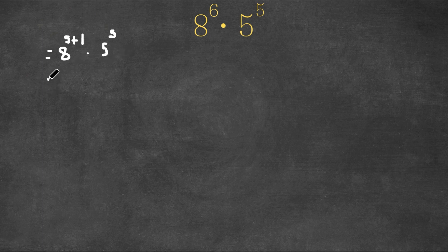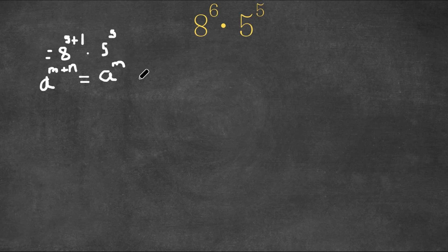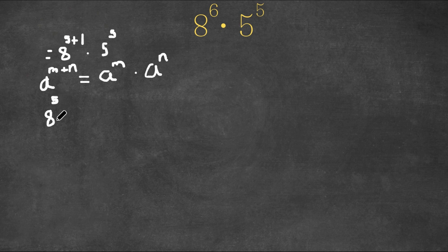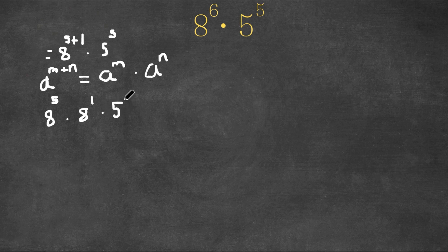Now if we have an exponent in the form a to the power of m plus n, this is equal to a to the power of m times a to the power of n. So 8 to the power of 5 plus 1 — here 8 is a, 5 is m, and 1 is n — would become 8 to the power of 5 times 8 to the power of 1. And we are still multiplying this with 5 to the power of 5.